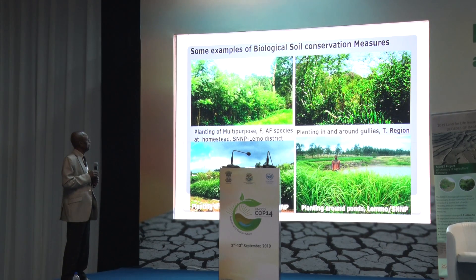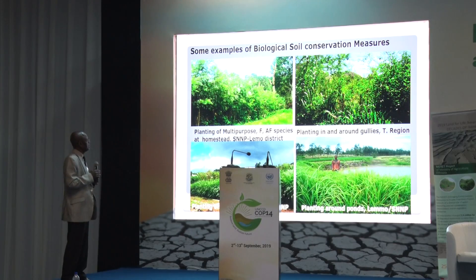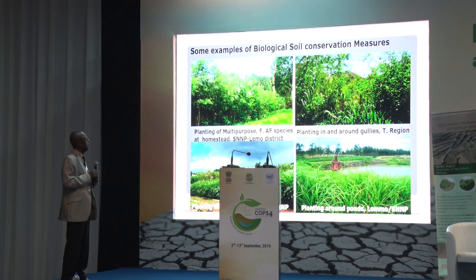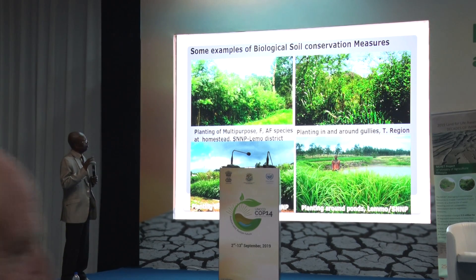Different biological soil conservation measures have been integrated with physical soil conservation, including planting of forestry, agroforestry, improved forage species, and multi-purpose species in closed areas, around and in gullies, on conservation structures, and on farm boundaries. The overall purpose is to stabilize the degraded environment, establish conservation structures, and produce biomass for the community for livestock feed, fuelwood, and construction materials, and to sustainably conserve the degraded environment.